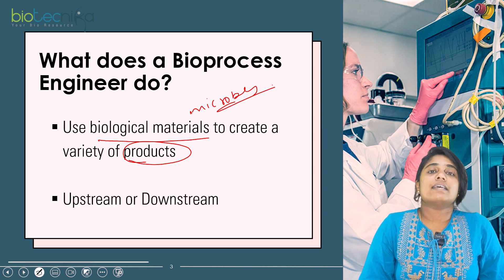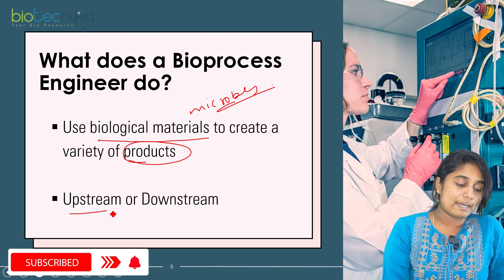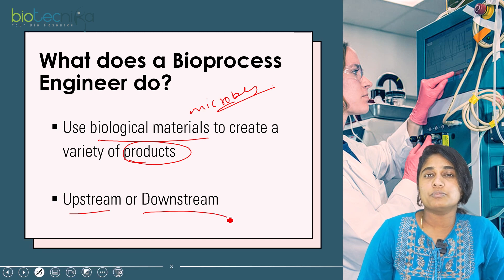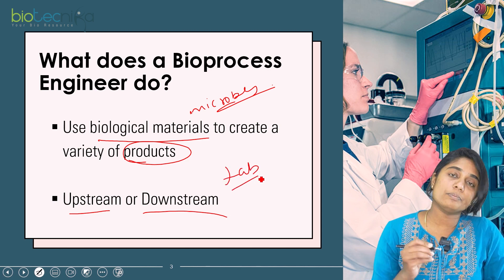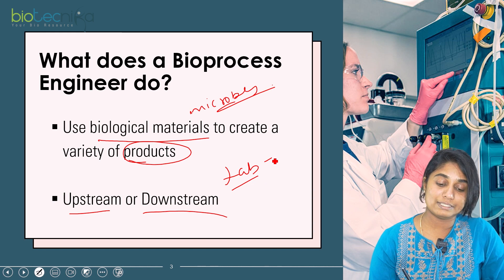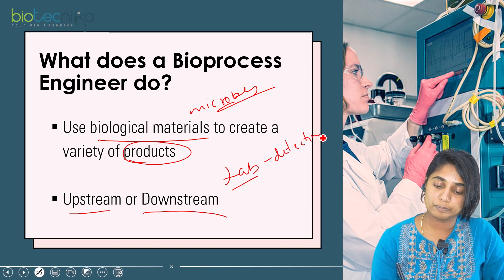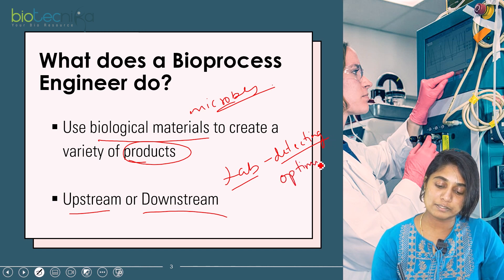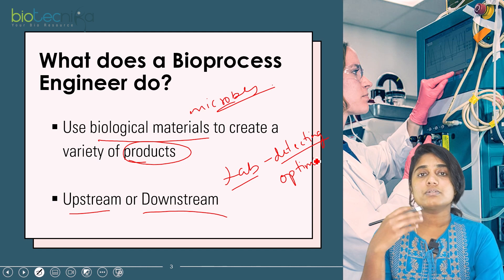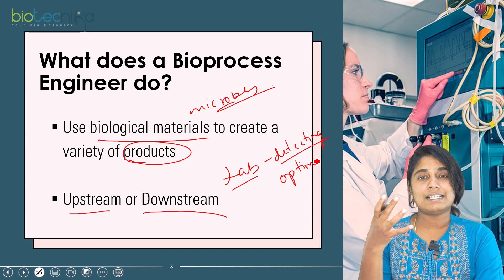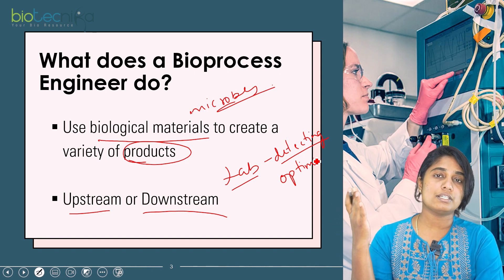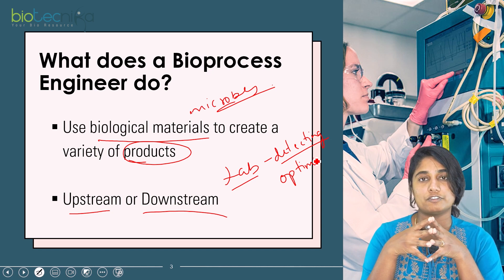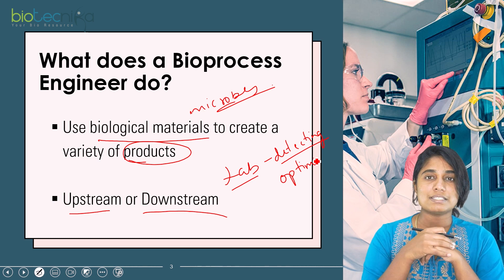Bioprocess engineering consists of both upstream and downstream processes. The upstream process involves more lab work. In the lab, you detect which microbe you will use for product manufacturing and optimize its growth. You produce the product and validate it at lab scale, then take it to industry scale and observe in the bioreactor how the microbe behaves and how the product is obtained.